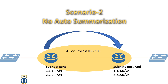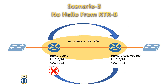If a packet is not acknowledged, EIGRP retransmits the packet to the non-responding neighbor as a unicast. No other traffic is sent to this neighbor until it responds. After 16 unacknowledged retransmissions, the neighbor is removed from the neighbor table. A neighbor is considered lost if no hello is received within 3 hello packet intervals.